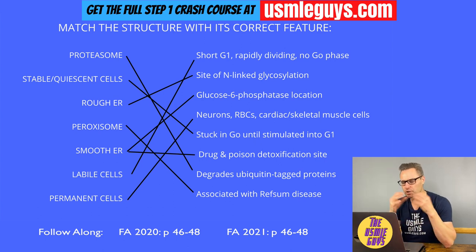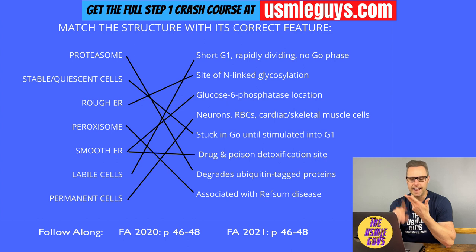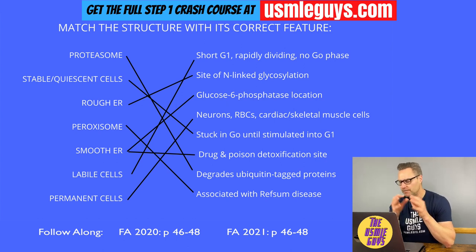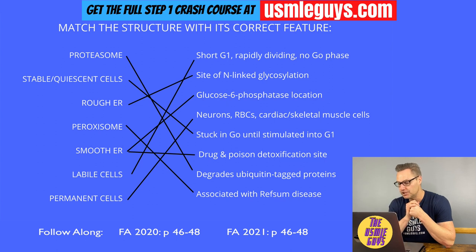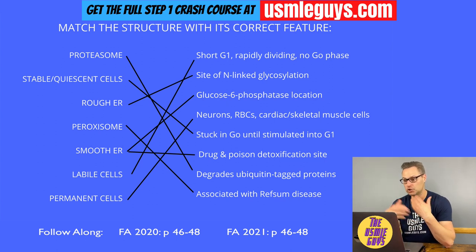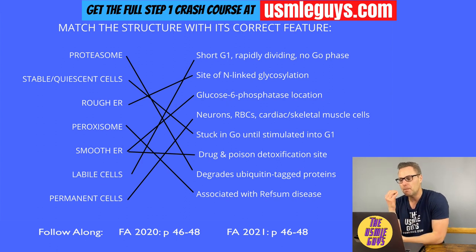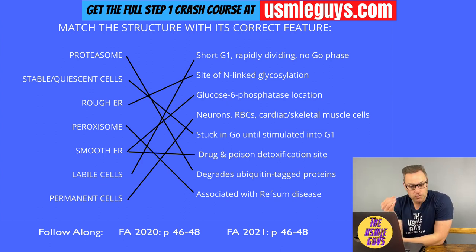Labile cells — think skin, hair, gut epithelium, bone marrow. These have a short G1 phase and never enter G0 because they need to keep dividing due to rapid turnover. Because of this rapidly dividing nature, these cells are most sensitive to the negative effects of chemotherapy.